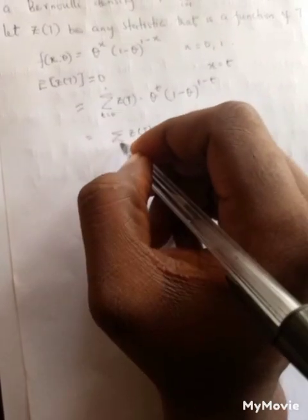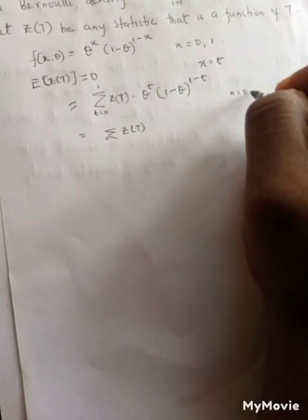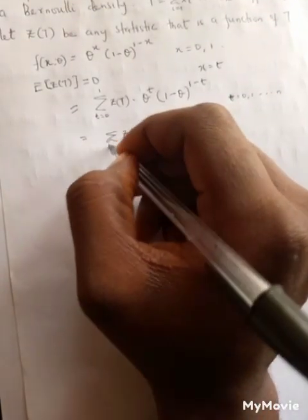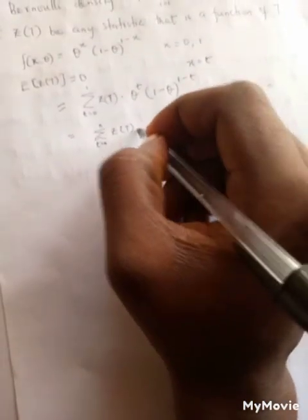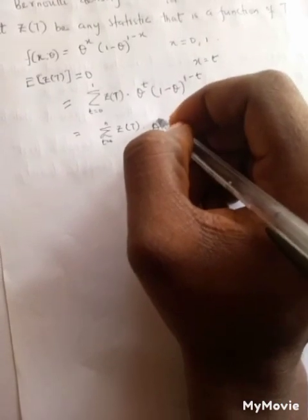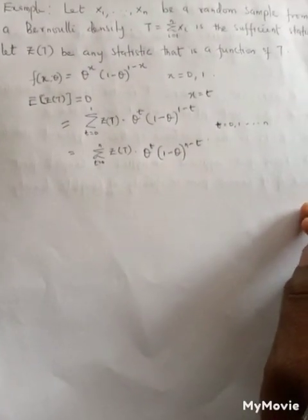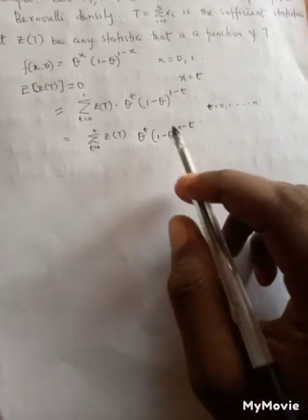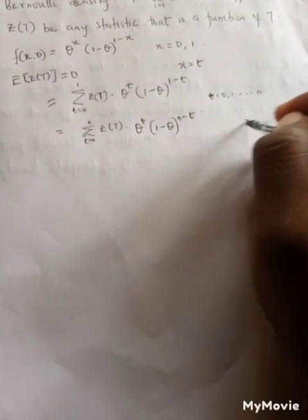When you take the sum of a Bernoulli distribution, what you get is a binomial distribution. So this becomes a sum of z(t), with t from zero to n, times the binomial distribution terms: theta to the power of t times one minus theta to the power of n minus t. We want to check whether z(t) equals zero. If z(t) equals zero, then the expectation of z(t) also becomes zero, since the expectation of the constant zero is zero.